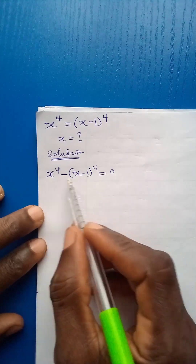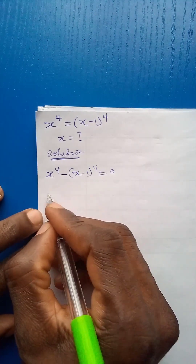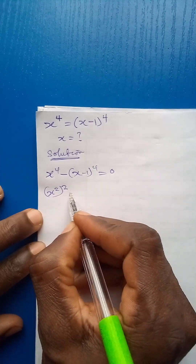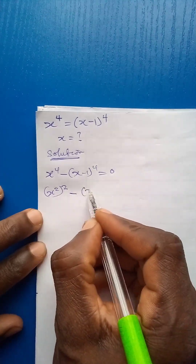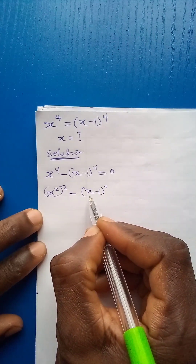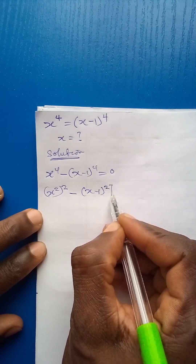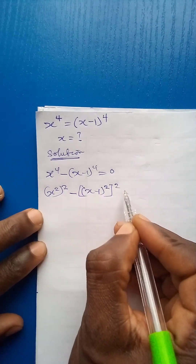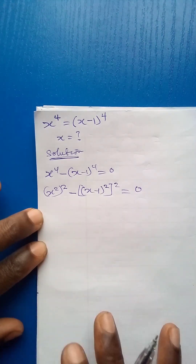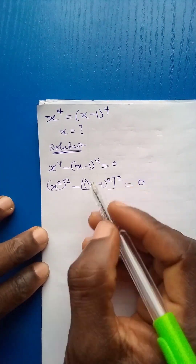I can turn this into a difference of two squares. So I rewrite this as x squared, all squared, minus x minus 1 squared, all squared, is equal to 0. What we have here is basically a difference of two squares.